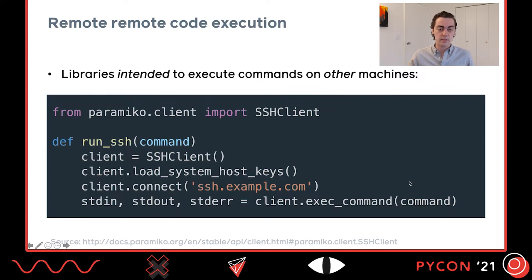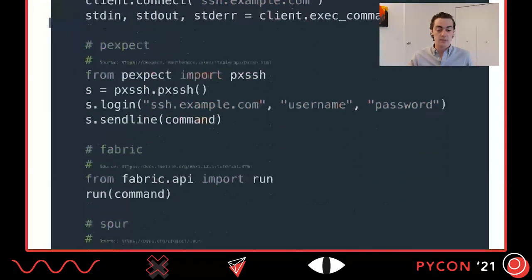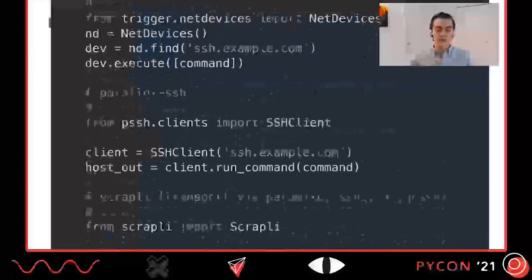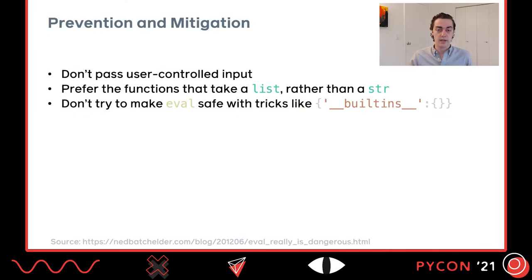Beyond APIs explicitly intended to execute code on the same machine, there's also what I call remote remote code execution — libraries intended to execute code on a different machine. The most common example is SSH libraries. With libraries like Paramiko, you pass a command and it SSHes into another machine and runs it there. There's a long list including Paramiko, pexpect, Fabric, Spur, asyncssh, ssh2, Twisted, Trigger, parallel-ssh, Scraply, Redexpect, and Netmiko. To prevent RCE through these APIs: don't pass user-controlled input into them; if you must, use APIs that take a list rather than a string — the list makes arbitrary command injection harder. And don't try to make eval safe by zeroing out the built-ins dictionary — it doesn't work.